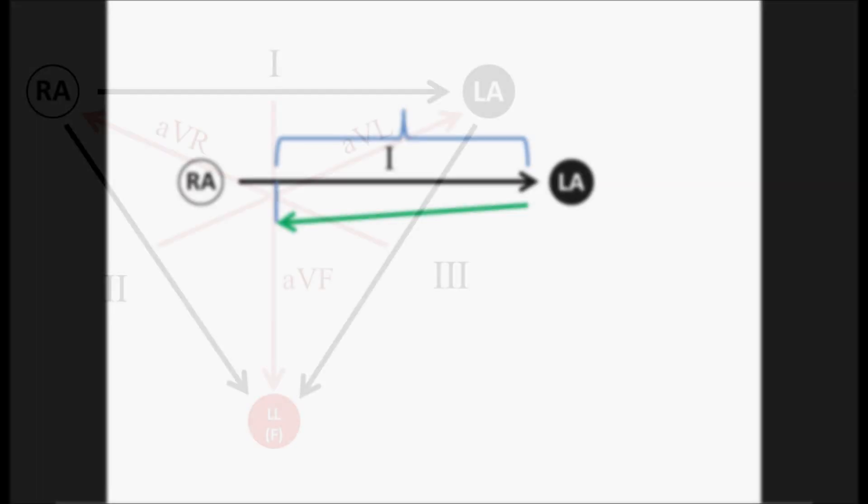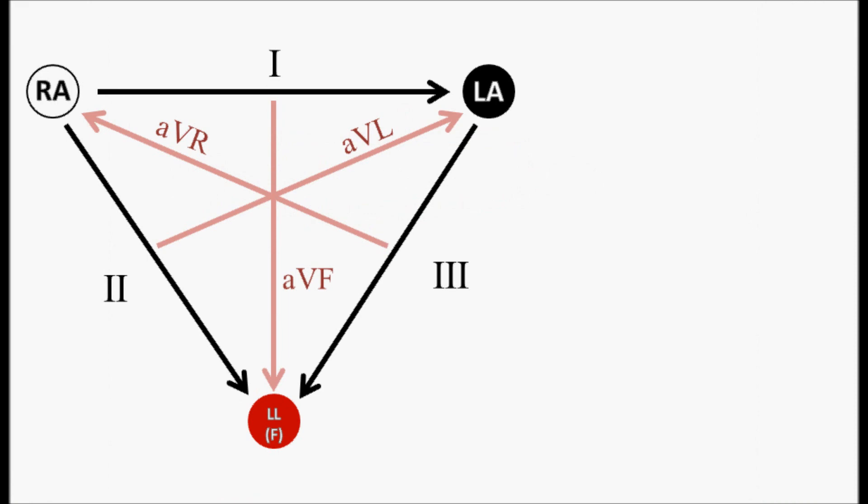So now let's go back to Eindhoven's triangle and see the magic happen. As you can see here, when I am looking at the left side of the heart, which is the lateral aspect of it, I'm going to be looking at leads one and AVL, because as you can see here, the arrowheads point directly there. If I'm looking at the inferior wall of the heart, which is down here, I'm going to be looking at these three leads, which are two, three, and AVF, and these will give me an idea of what's going on in the inferior wall.